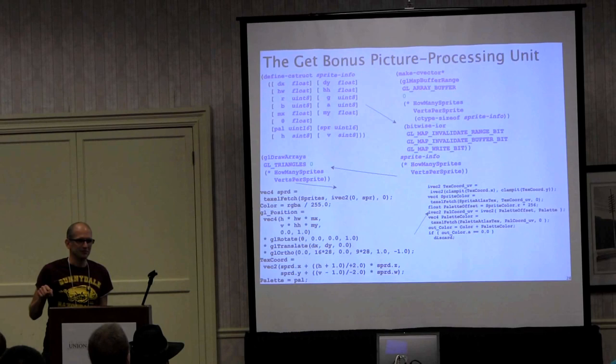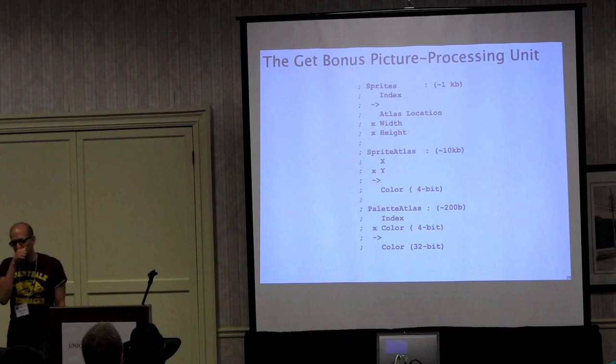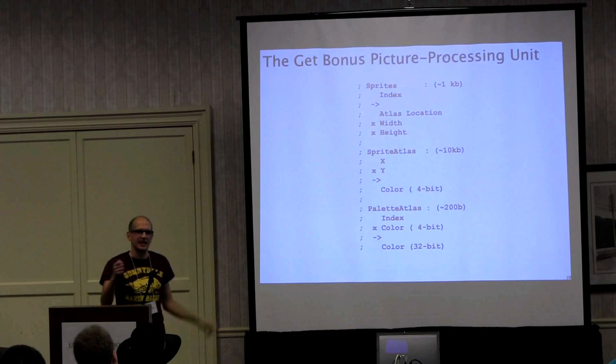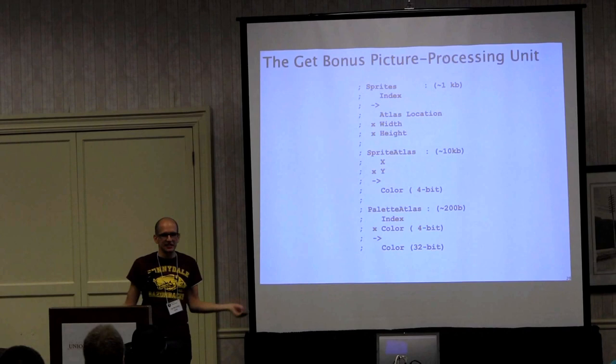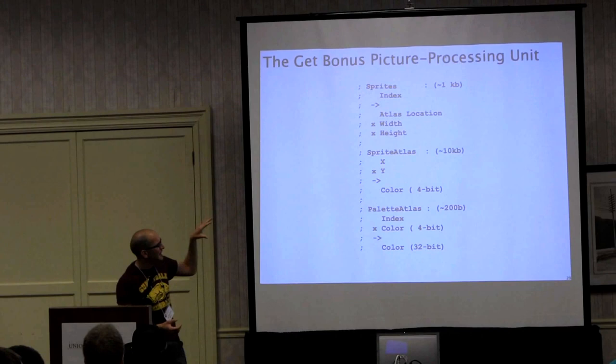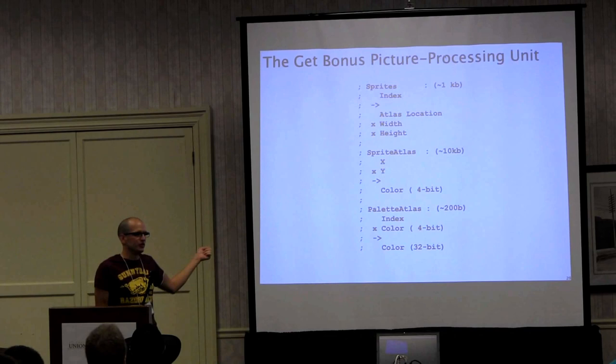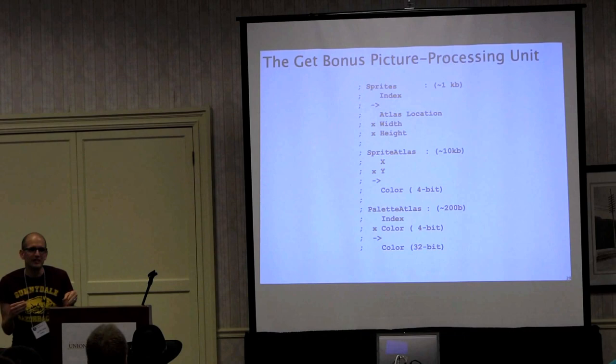That uses three pieces of static data: a database of sprites saying that Link is number 17, an atlas showing where each sprite exists along with its width and height, laid out using a bin packing algorithm. The color data is stored in 4-bit palettes using an index to look up the actual 32-bit color. Altogether, we have about 11 kilobytes of data sent to the graphics card for the whole game engine to run.